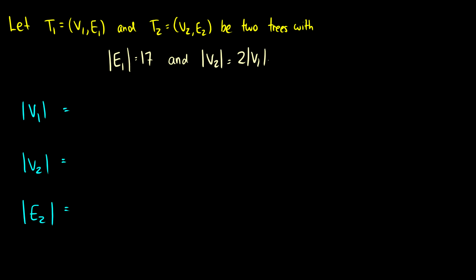So let's do a question related around this property. We have two graphs, T1 and T2. And we're given the knowledge that the number of edges in 1 is 17. And the number of vertices in graph 2 is 2 times the number of vertices in graph 1. So what is V1?